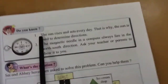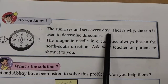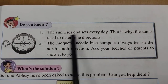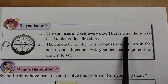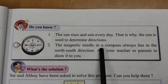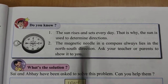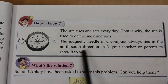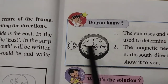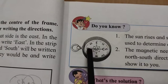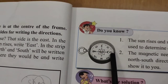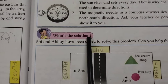Do you know the sun rises and sets every day? The sun rises in the East and sets in the West, and that is why the sun is used to determine directions. The magnetic needle in the compass always points in the North-South direction. Ask your teacher or parents to show it to you.